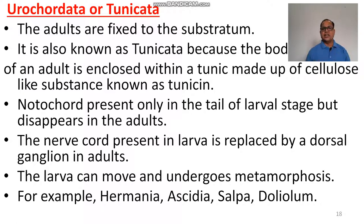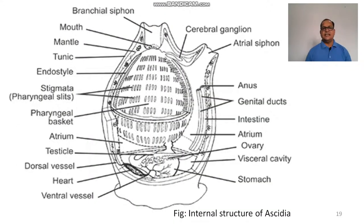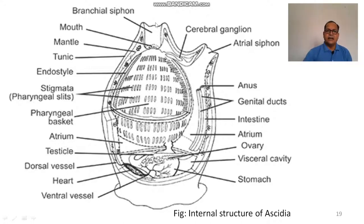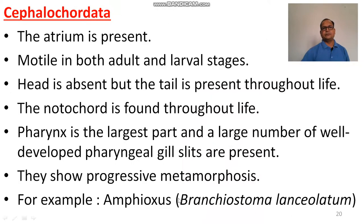Examples of Urochordata include Herdmania, Ascidia, Salpa, and Doliolum. This is the internal structure of Ascidia, which is a tunicate. The largest part of the body is the pharynx, which is perforated by numerous gill slits. They have two pores: the brachial aperture and the atrial aperture. Water enters the body through the brachial aperture and exits through the atrial aperture. The body has two parts — the body and the foot — and by the foot they attach to the substratum.